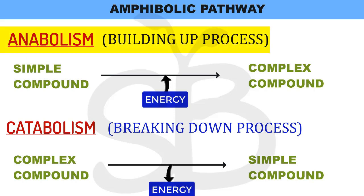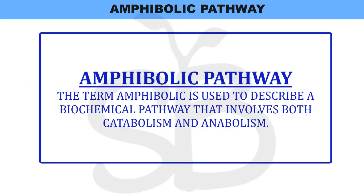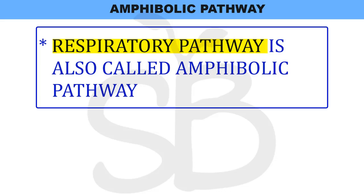Anabolism is used alongside the catabolism process. This process is called the Amphibolic Pathway. Now we have to discuss the Amphibolic Pathway. The respiratory pathway — what we are learning about today — involves the anabolism process, where we get glucose and break it down.